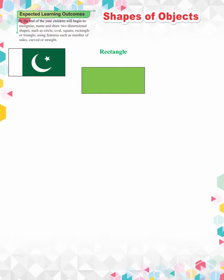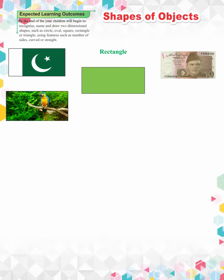This is the flag of Pakistan — it is a rectangle shape. This is a currency note — it is also a rectangle shape. This is an LED — it is a rectangle shape as well. And your classroom whiteboard is also a rectangle shape. Think of other rectangle shapes and tell your friends.